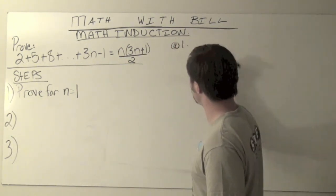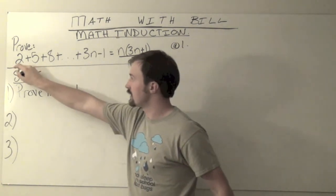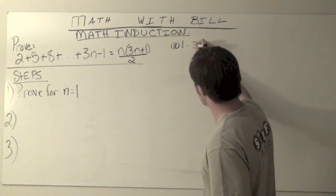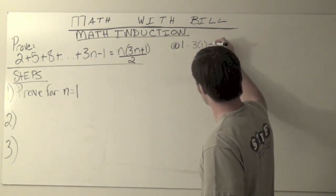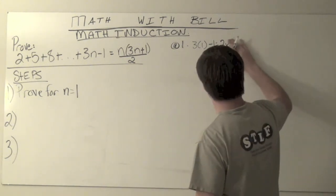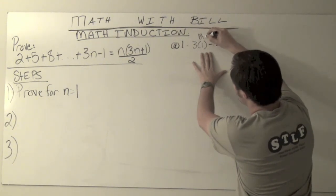Okay, so at 1 I'm going to say that the first term of my sequence when this 3n minus 1 would be 3 times 1 minus 1, which is equal to 2. Okay, great, perfect. So that's the method.